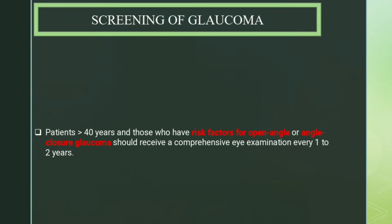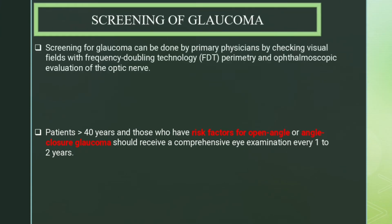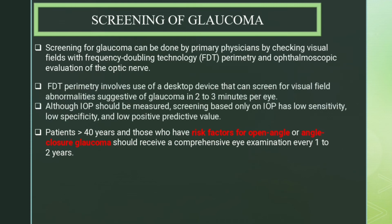Screening for glaucoma can be done by primary physicians by checking visual fields with frequency doubling technology (FDT) perimetry and ophthalmoscopic evaluation of the optic nerve. FDT perimetry involves use of a desktop device that can screen for visual field abnormalities suggestive of glaucoma in two to three minutes per eye. Screening based only on intraocular pressure has low sensitivity, low specificity, and low positive predictive value.